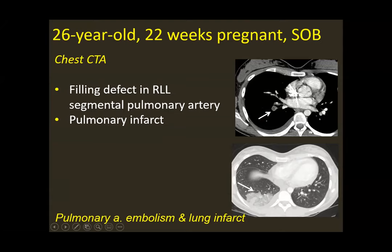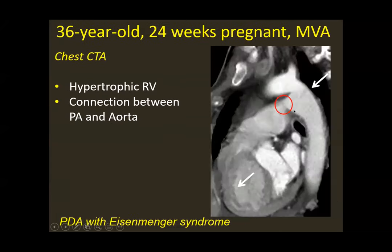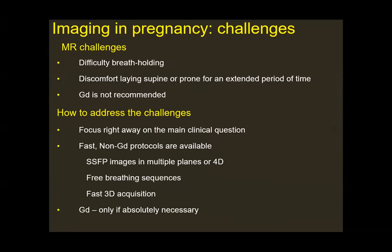Another patient, 36 years old and 24 weeks pregnant, was involved in an MVA. We found no traumatic effect, but did identify a very hypertrophic right ventricle and a connection between the aorta and pulmonary artery — a patent ductus arteriosus. For MRI, the challenges include difficulty with breath-holding on multiple sequences, discomfort of lying supine for extended periods while pregnant, and the restriction on gadolinium administration. The solution is to focus immediately on the main clinical question and use fast non-gadolinium protocols such as SSFP, free-breathing sequences, and fast reacquisition.